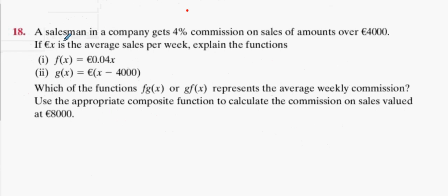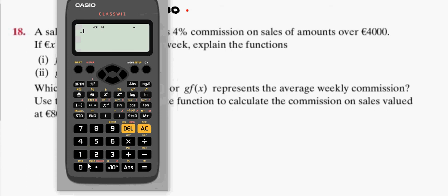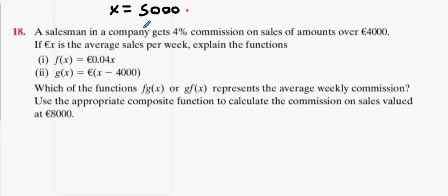Alright, an example: imagine x is €5000. Okay, imagine x is €5000—that means we sold €5000 worth of equipment in that week. Point zero four of x would be what? So 0.04 of 5000 would be €200. So this represents the 4% commission. Everybody cool with that?